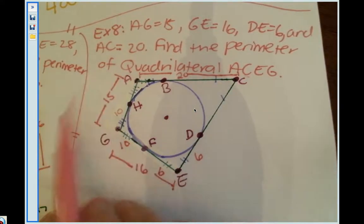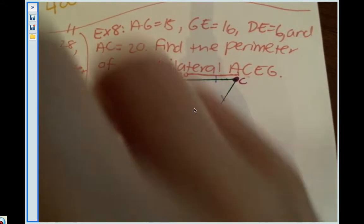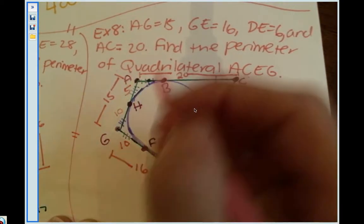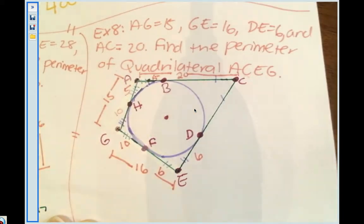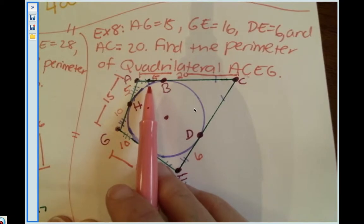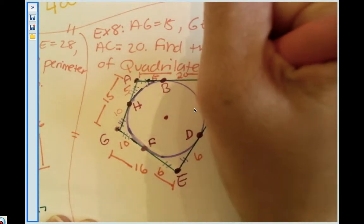Since the whole thing is 15, if that's 10, 10 plus what will give me 15? It is a 5. So that's 5, which means this piece is 5.